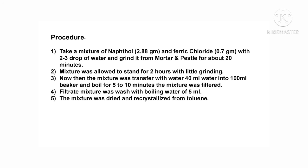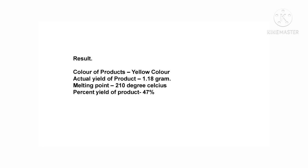Step 5: The mixture was dried and recrystallized from toluene. Result: The color of the product is yellow. Actual yield of product is 1.18 g, melting point is 210°C, and percent yield is 47%.